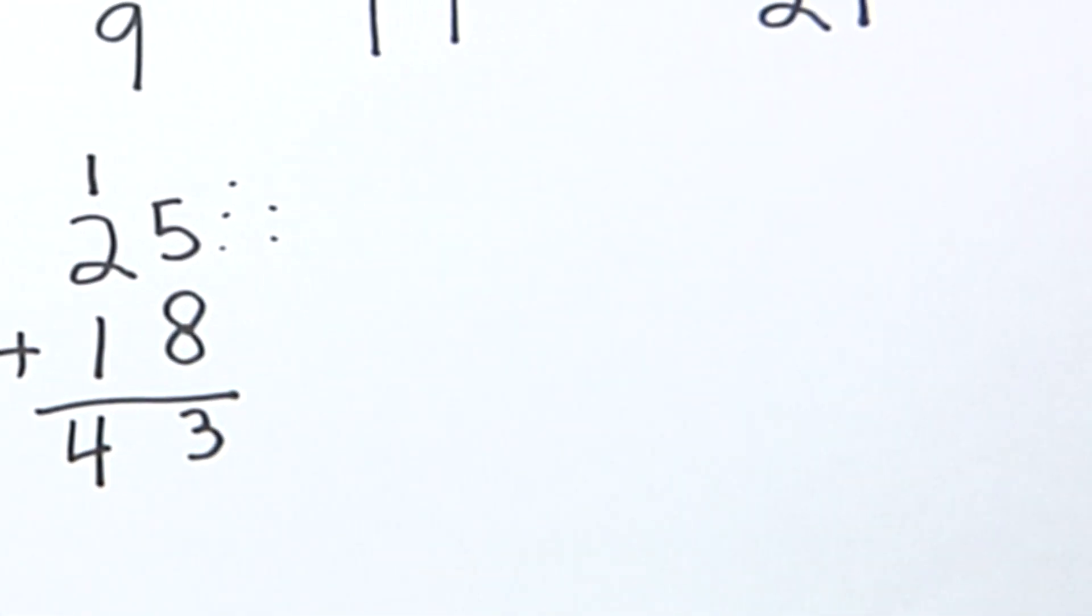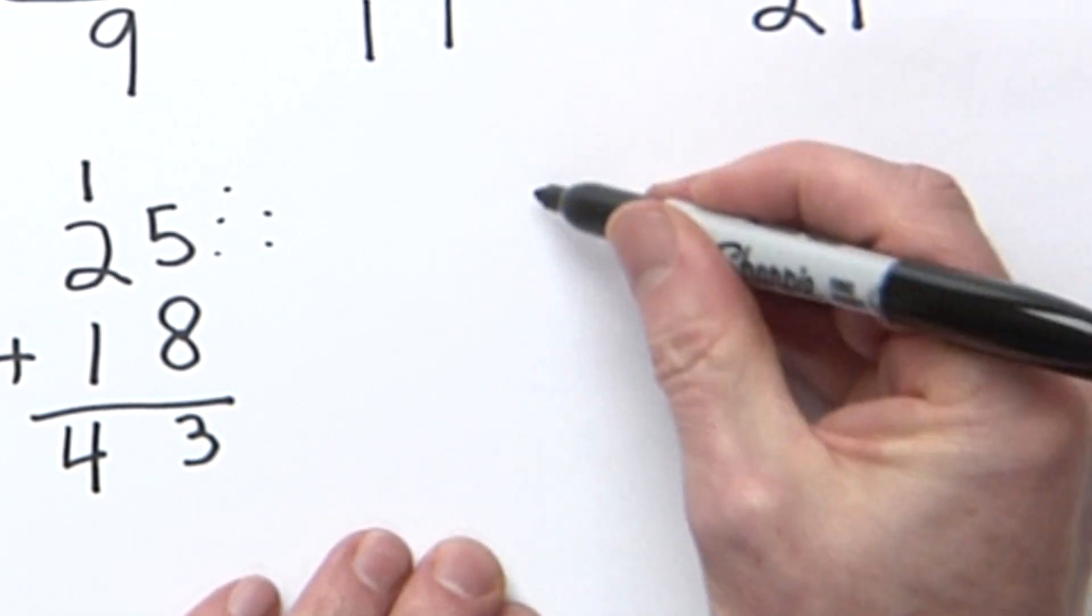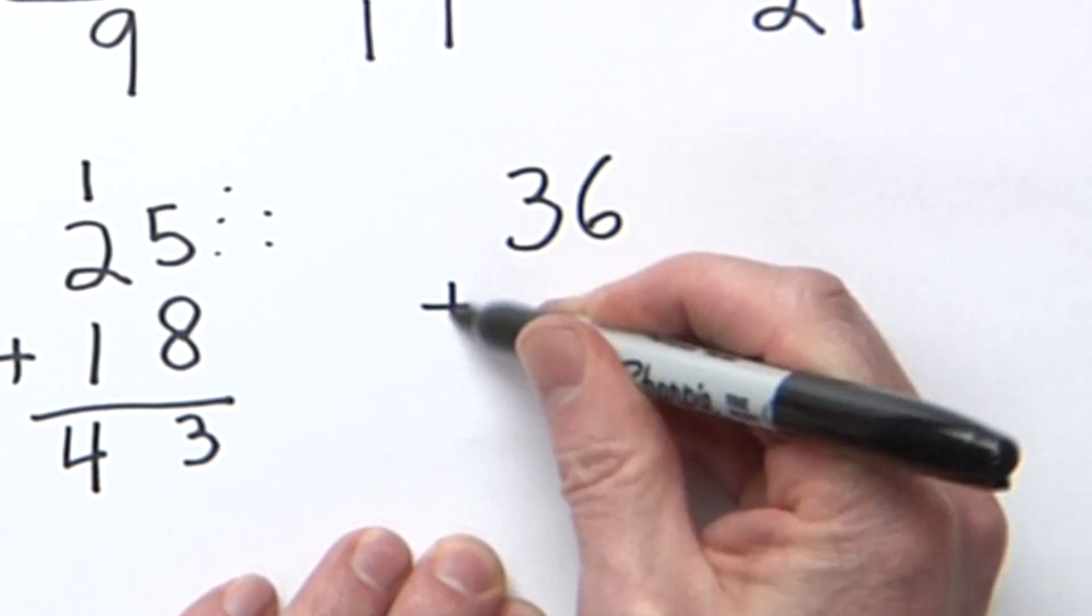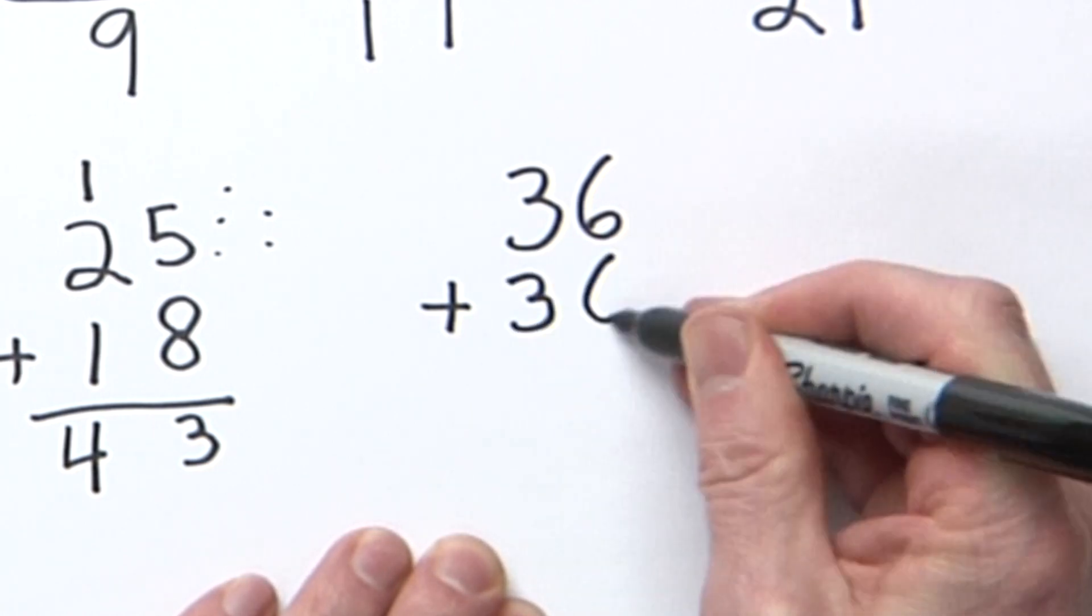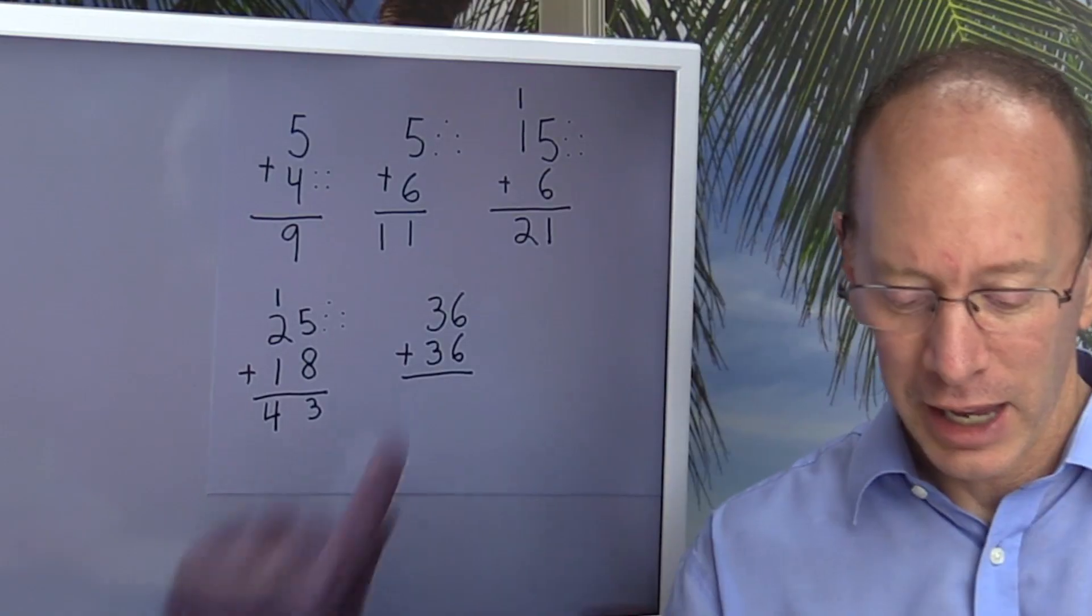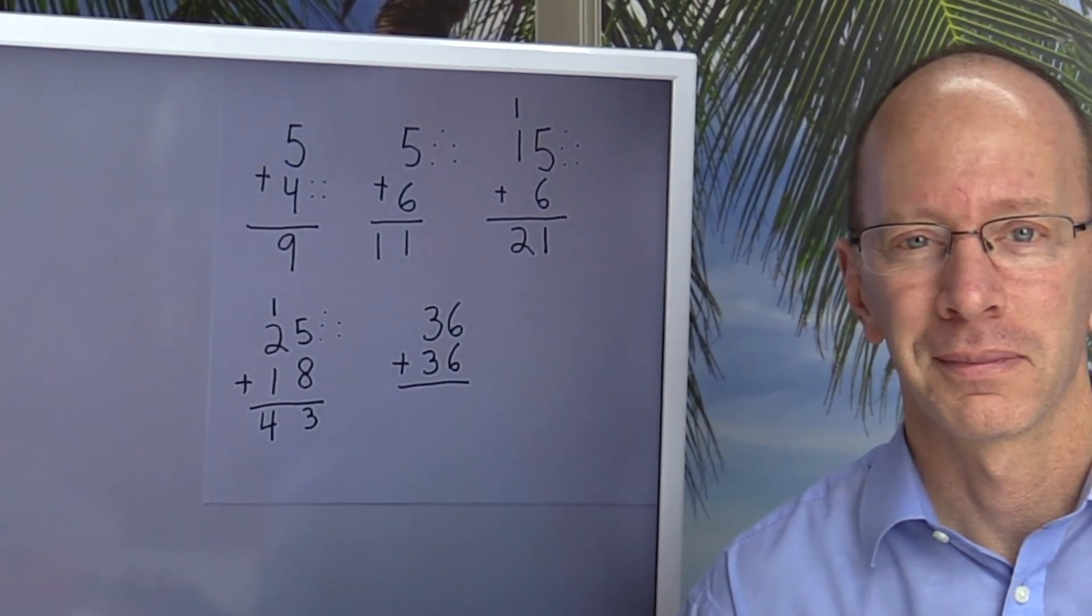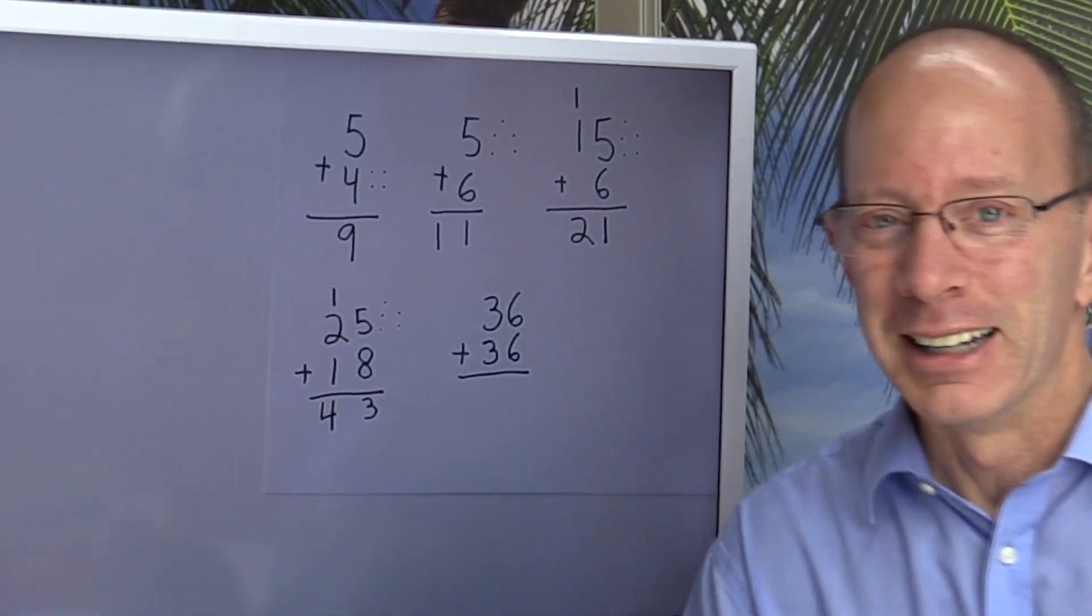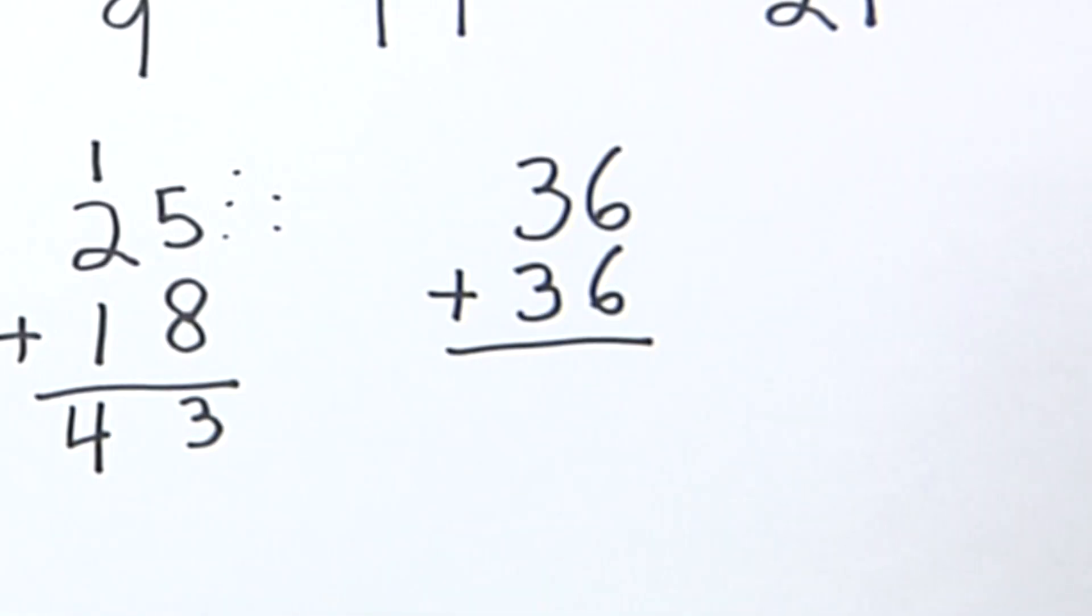I love it. Let's do two more. Let's do a number like this: 36 plus 36. If you want to, you can pause the video right now and do this problem. All right, let's get right into solving this. First of all, what do I add? Do I add the ones first or the tens first? You're right - we add the ones first.